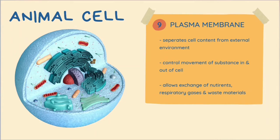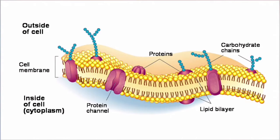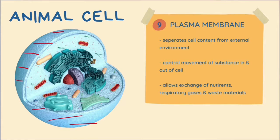Another important organelle is the plasma membrane that surrounds all the contents of the cell. The plasma membrane is a thin and elastic film made up mainly of lipids and proteins. This plasma membrane is semi-permeable, meaning it only allows certain substances to go into and out of the cell. Its function is to separate the cell content from the external environment, to control the movement of substances in and out of the cell, and to allow exchange of nutrients, respiratory gases and waste materials.